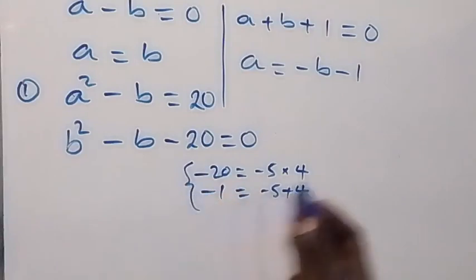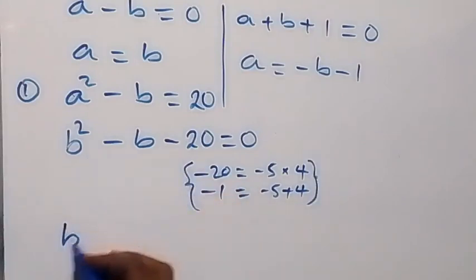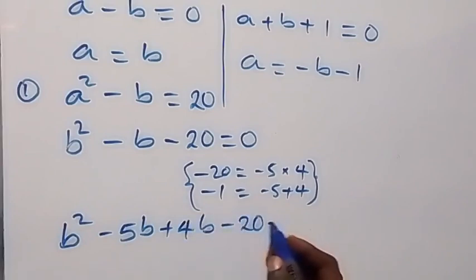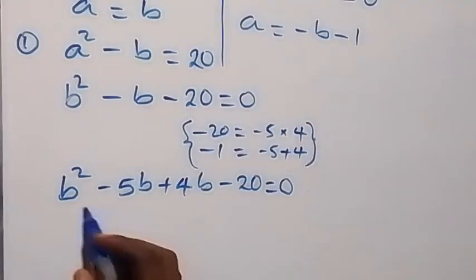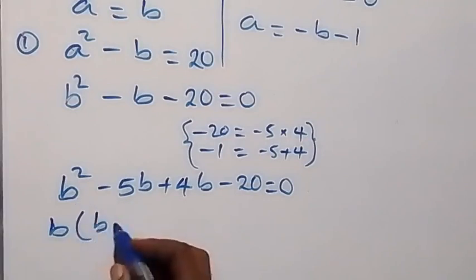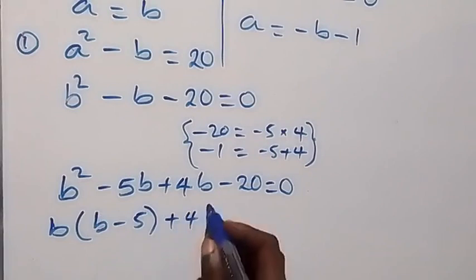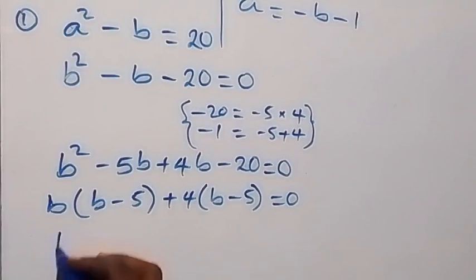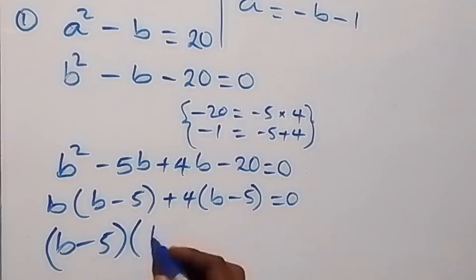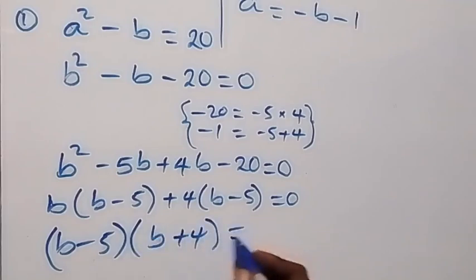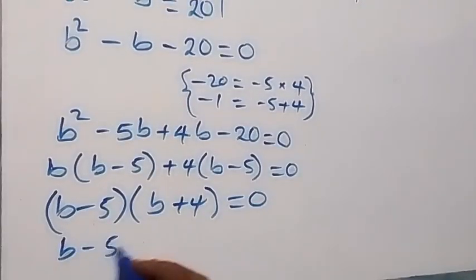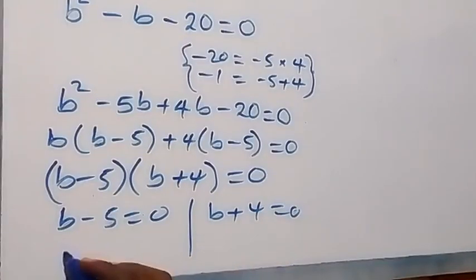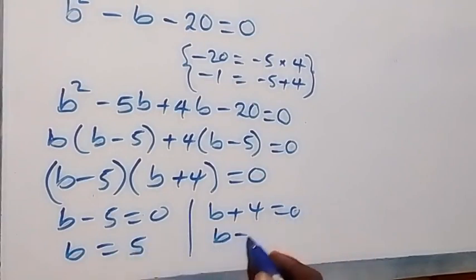This implies we can write b squared minus 5b plus 4b minus 20 equals zero. Factoring, b is common in the first two terms giving b(b minus 5), plus 4(b minus 5) equals zero. Then (b minus 5) is common, so we have (b minus 5)(b plus 4) equals zero, giving either b minus 5 equals zero or b plus 4 equals zero.